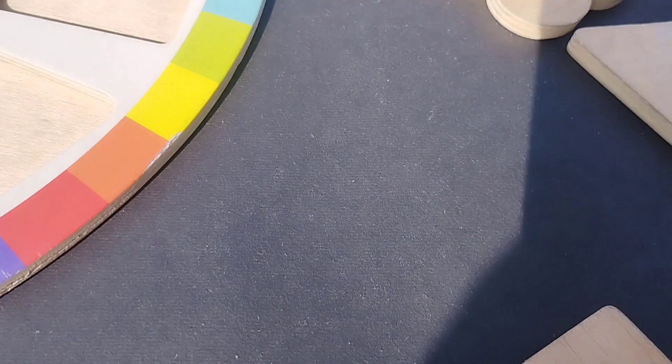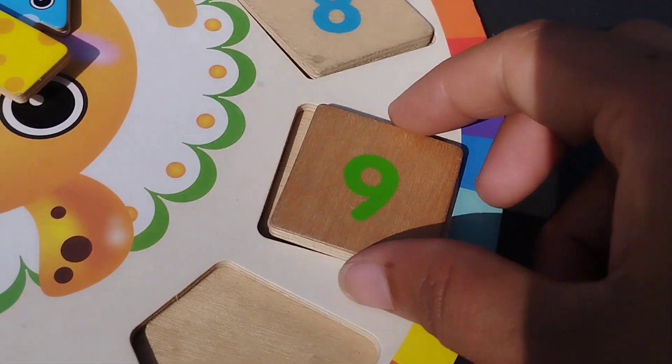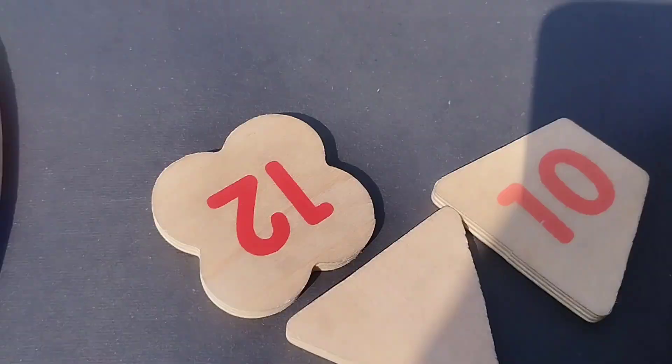The next point is square. This is square shape. The number is nine.